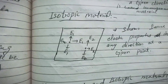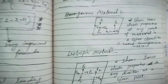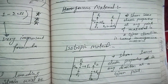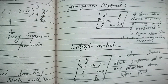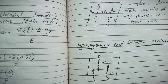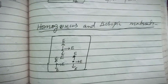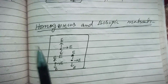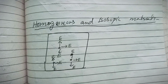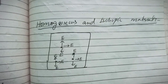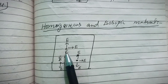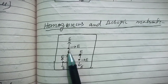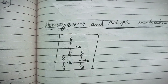This is an isotropic material, and you can see the difference between isotropic and homogeneous material from these notes. If a material is both homogeneous and isotropic, then at any point and in any direction the elastic property E is the same throughout the entire material.